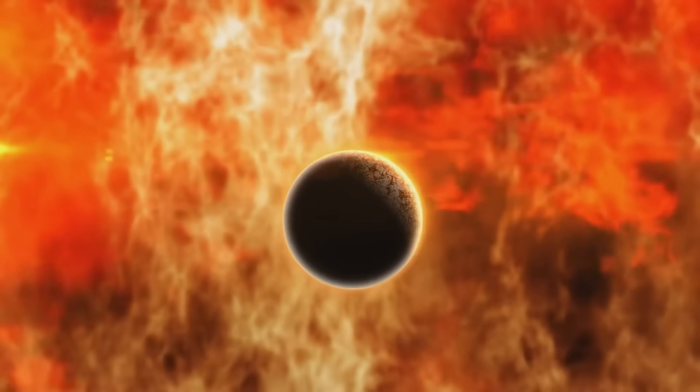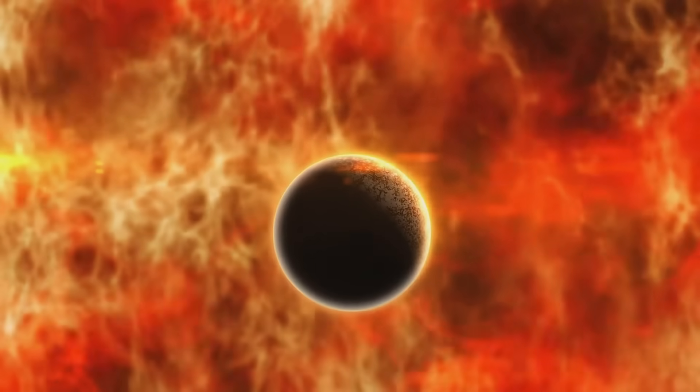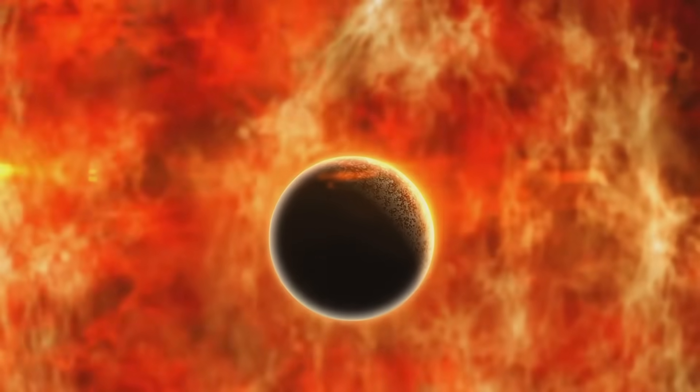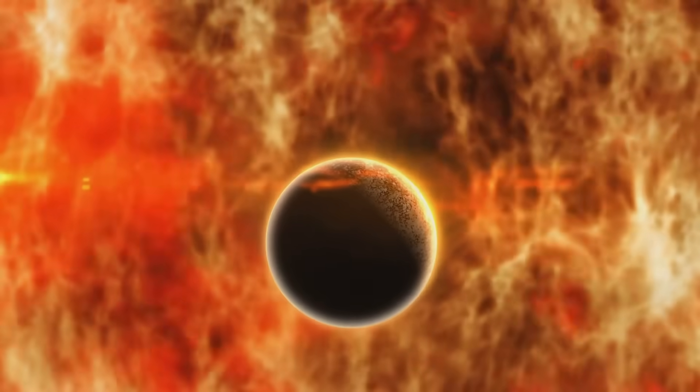According to this theory, Mercury, our closest neighbor to the Sun, was once a young Earth, and Neptune is what Earth might look like far in the future.